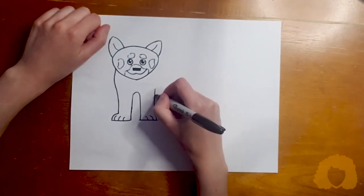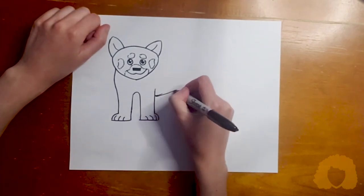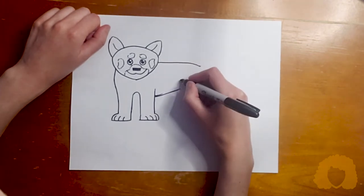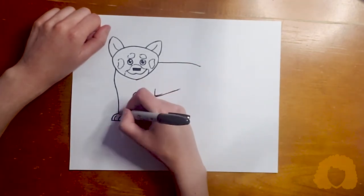Then for my body, I'm going to have him standing, so I'm going to draw my belly and my back, again no neck, and I'm going to essentially copy my paws.